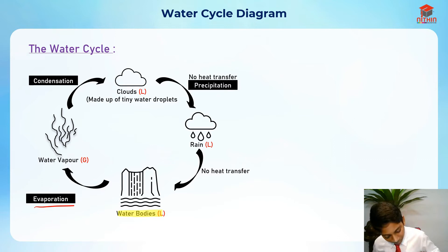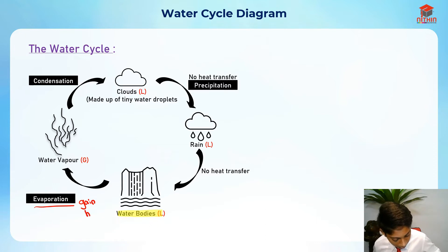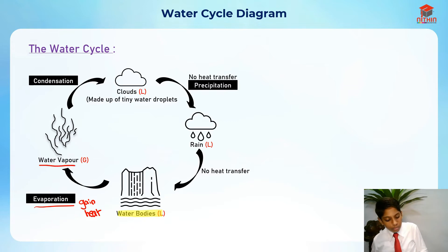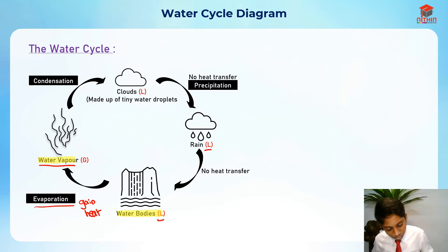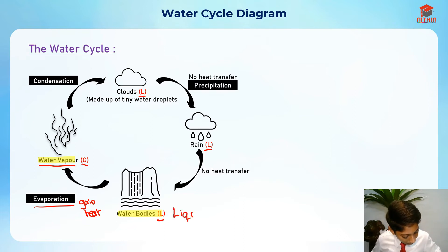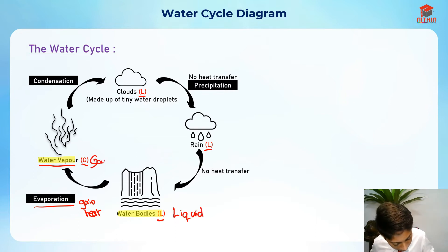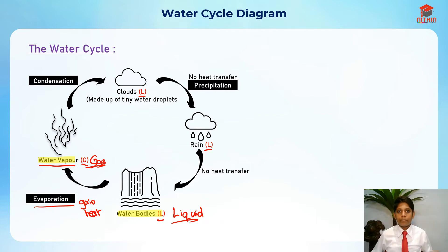Basically it is gaining heat. Then from evaporation, it turns into water vapor, which is a gas. So let me just clarify the letters over here — L, L, G, and L. L actually stands for liquid, and G actually stands for gas. So this is basically the legend.